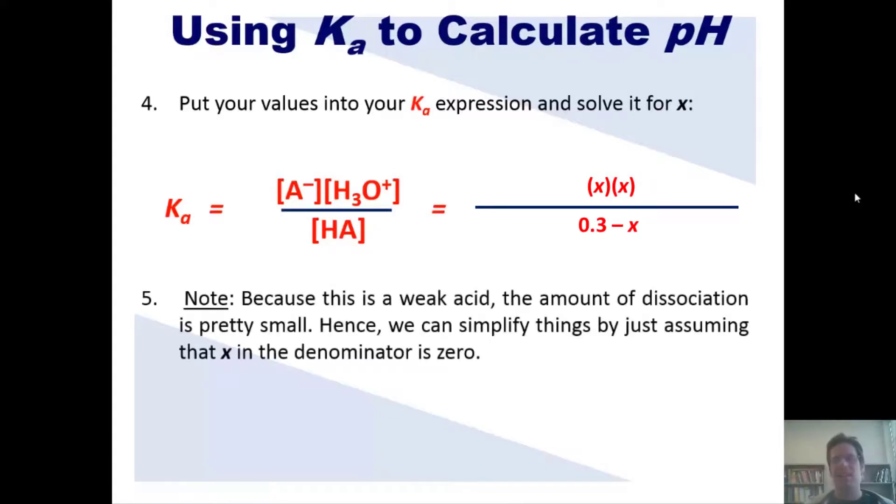Okay, now here's a tip. Because this is a weak acid, the amount of dissociation is pretty small. Hence, we can simplify things by just assuming that the X in the denominator is zero. I realize that isn't 100% true. X is not zero. But compared to 0.3, X is going to be a very, very, very tiny number, which means even if you calculate what X is and throw it in there, 0.3 minus X is going to be so close to 0.3 that you can practically just call X zero just in the denominator. Hopefully, you're okay with that. So if you turn X in the denominator into zero, it simplifies things a lot.